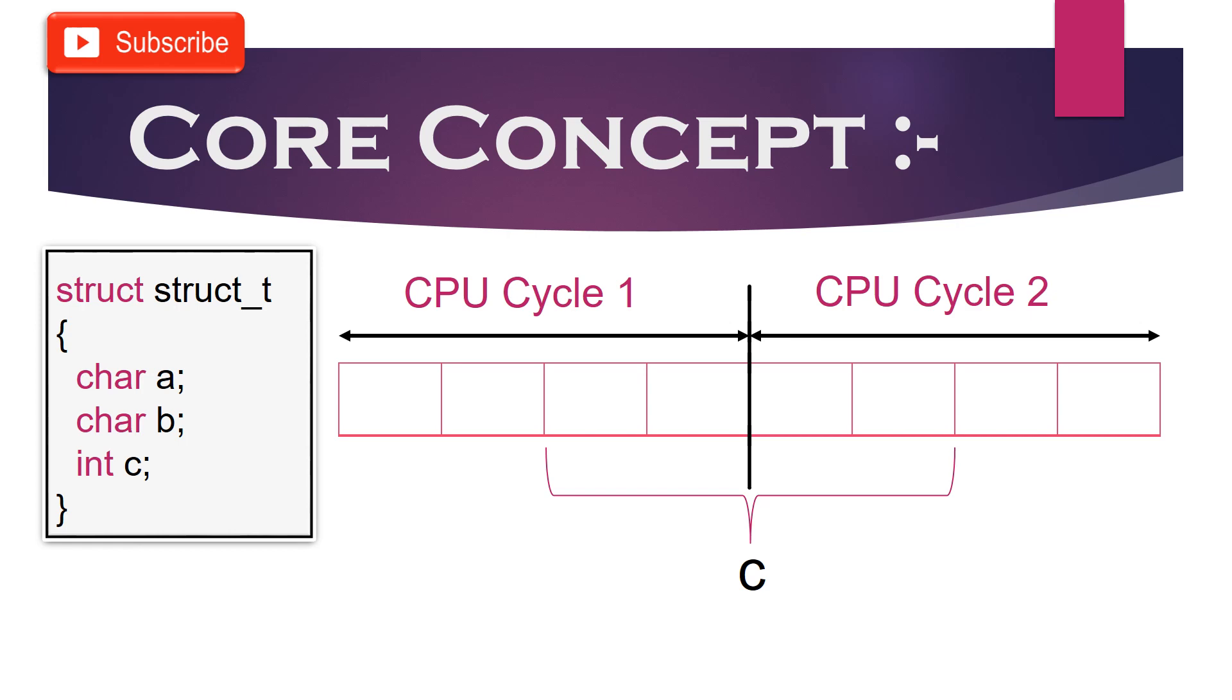But to read integer member C, CPU needs to consume 2 CPU cycles. Here the problem is to read 4 bytes which is possible to read in one CPU cycle by a 32-bit processor, still we need here 2 cycles which is a waste of CPU cycle. Which is quite costly in some of the real-time applications and could increase CPU output latency.